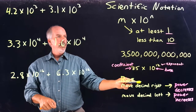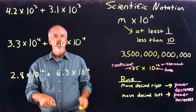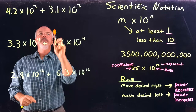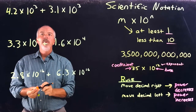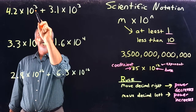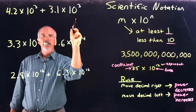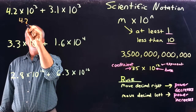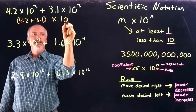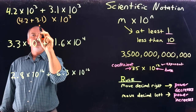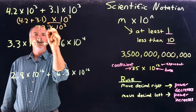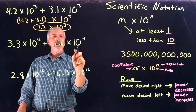We'll talk about our rule in a little bit when we get to more difficult problems. So let's look at this problem: 4.2 times 10 to the third plus 3.1 times 10 to the third. We want our problem to have the same power of 10. In this case both are 10 to the third, so we can simply add 4.2 plus 3.1, all multiplied by 10 to the third power, which gives us 7.3 times 10 to the third power.